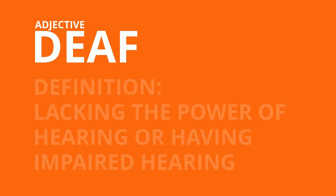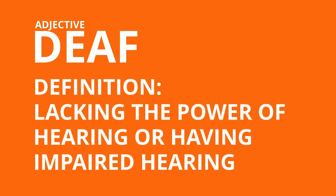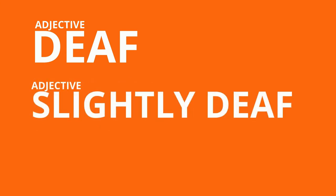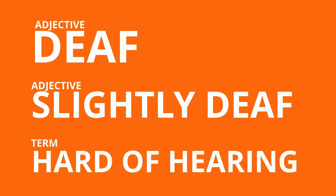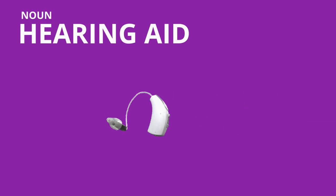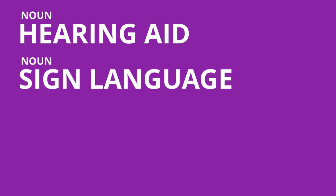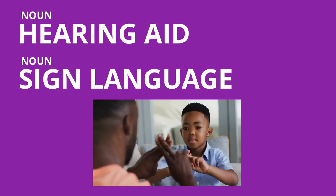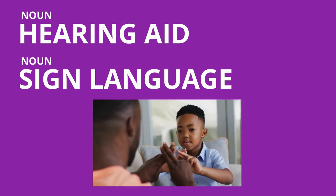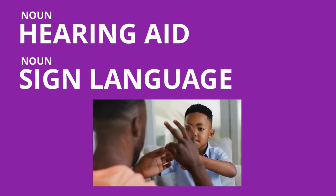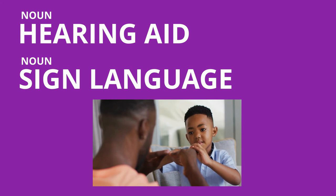Let's move away from verbs and look at an adjective: 'deaf.' This word is defined as lacking the power of hearing or having impaired hearing. Someone who has problems with their hearing may be called slightly deaf, and we also have the term 'hard of hearing,' which can describe someone who is totally or partially deaf. People with hearing issues will commonly wear a hearing aid. Deaf people have their own language — sign language — with many different types depending on the country. American Sign Language is commonly abbreviated to ASL.